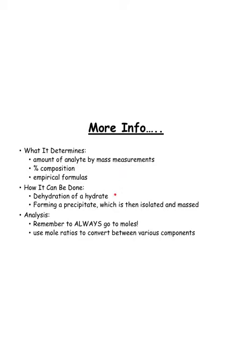You can do it through dehydration of a hydrate. You can do it through formation of precipitate, which is what I just showed you guys. You isolate that and you mass it. But when you're doing your analysis, you've got to remember, always go to moles because moles is that central unit that allows you to go from one substance to another. You're going to use those mole ratios to go between two substances in a balanced equation.